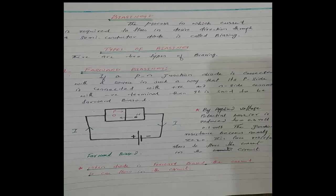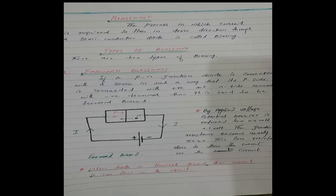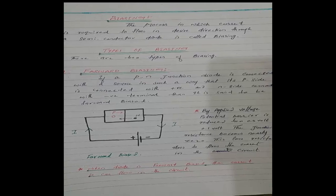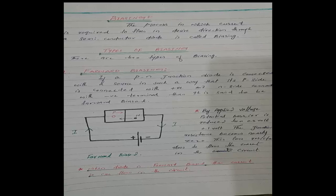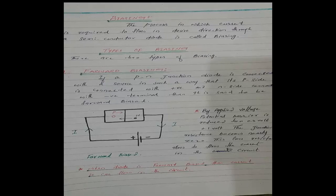First we have a p-n junction or semiconductor diode. When we apply external voltage and source to a diode, the current flows in a specific direction through the diode. This process is called Biasing.